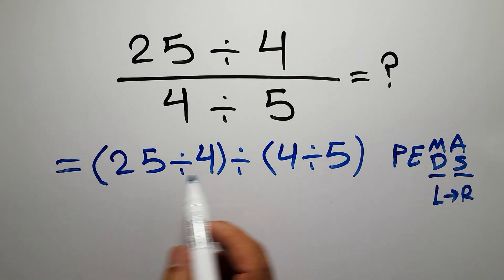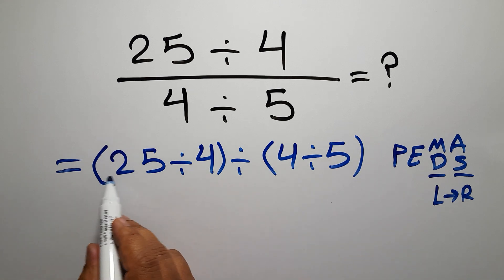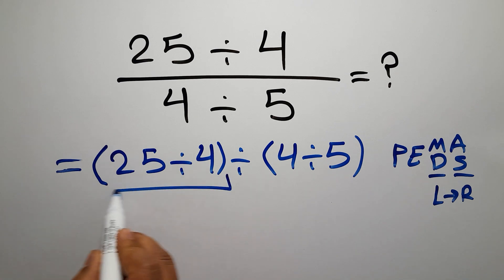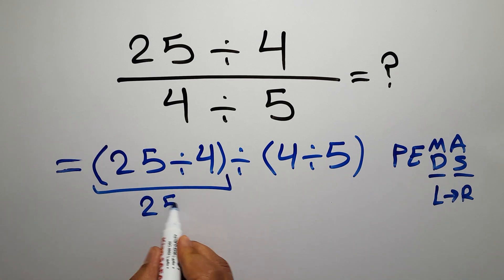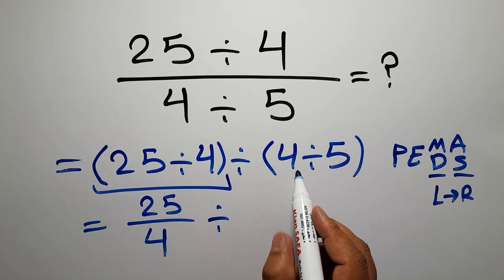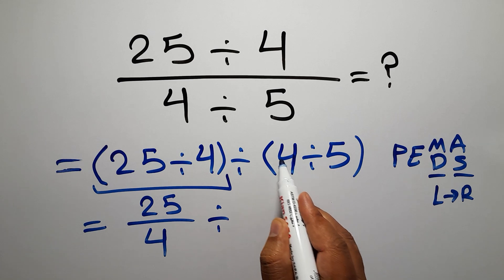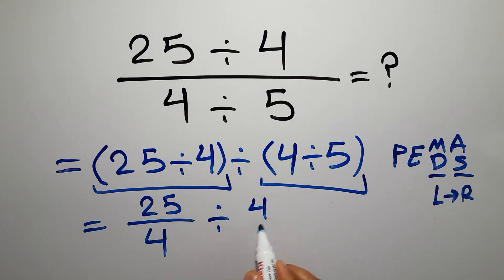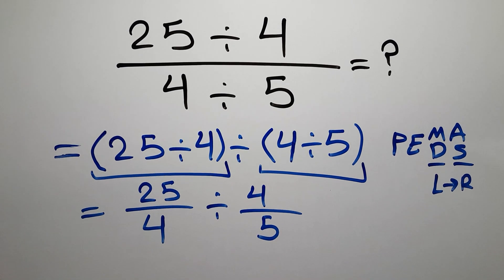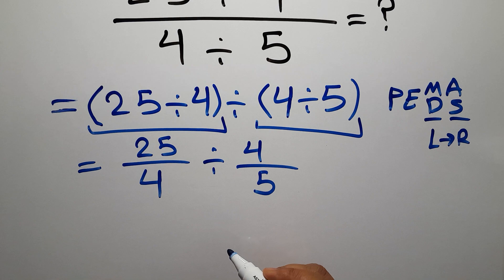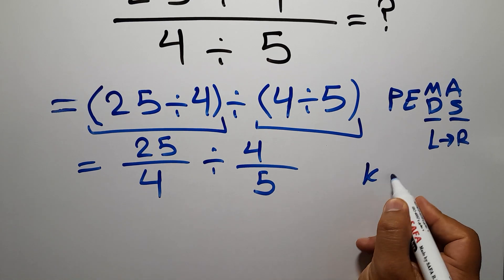So here, first we have to do these two parentheses. Inside the first parentheses we have 25 divided by 4, which we can write as 25 over 4. Then, divided by the second parentheses: inside we have 4 divided by 5, which we can write as 4 over 5. Now we have this fraction divided by this fraction.